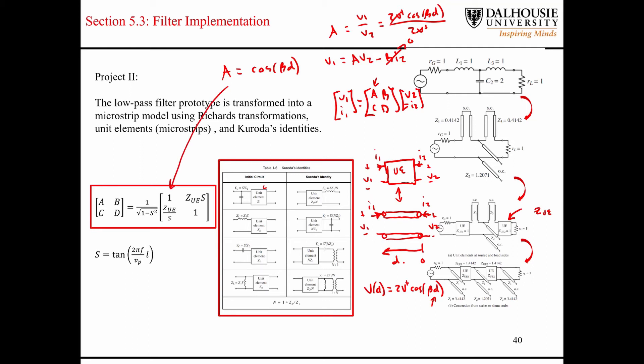So how do they go from a cosine equals to a equals 1 here? Well, you can see that this whole matrix is being multiplied by this term 1 over the square root of 1 minus s squared. So if you plug in the s equals to the tangent of this guy here, the Richards transformation, if you plug that in, then it will be equal to cosine of beta times d.